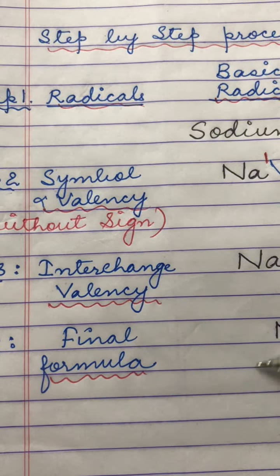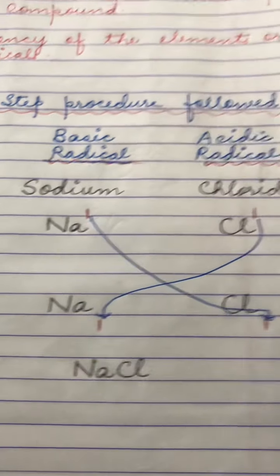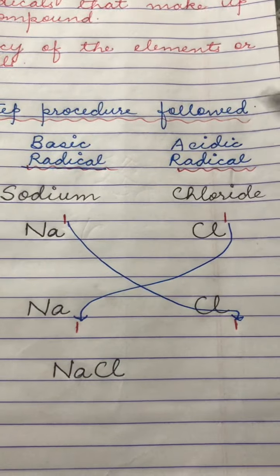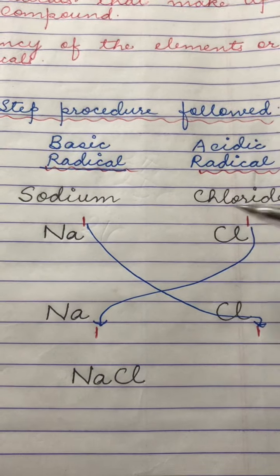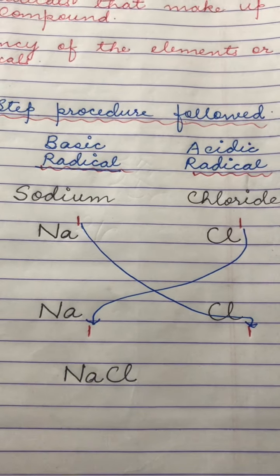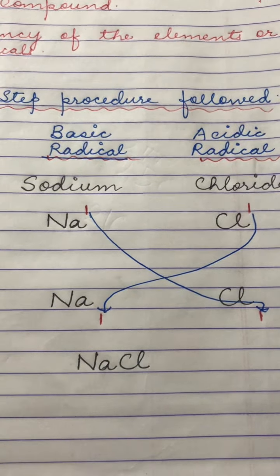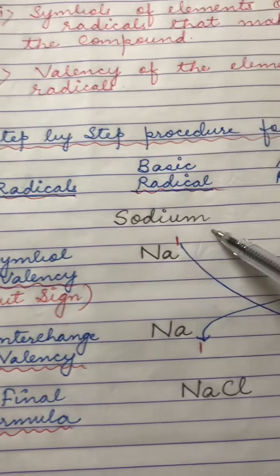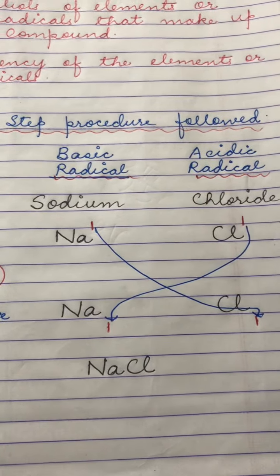Here I have taken this one example to give a very simple illustration, and in the forthcoming videos you will get a detailed explanation of how you do the crisscross method for writing any chemical formulae. So the first step and the simplest example that I've taken is of sodium chloride, which is commonly known as common salt.